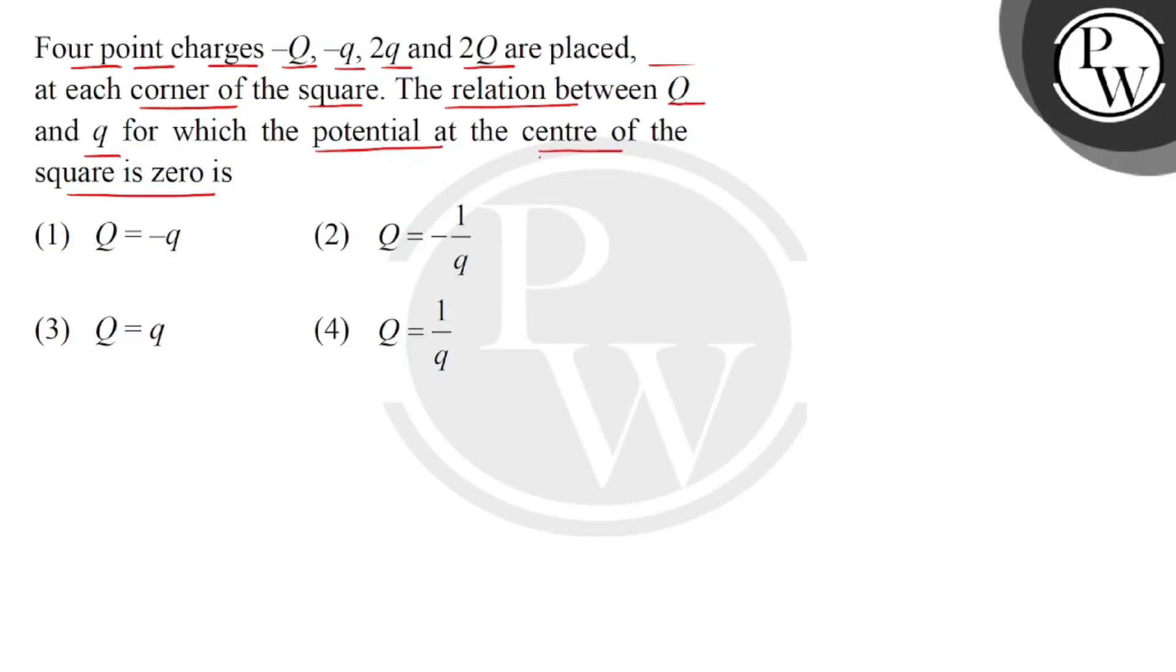So guys, given us in question one square, we think that the length of each side is capital L. Now, we have four corners of this square with four charges placed in order. Suppose this is minus capital Q, second is minus small q, then third is 2 small q and fourth is 2 capital Q.